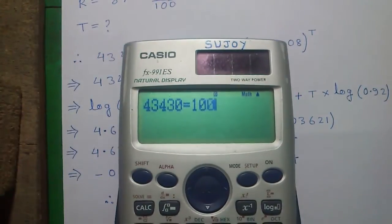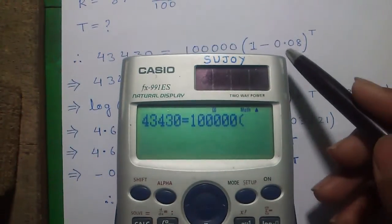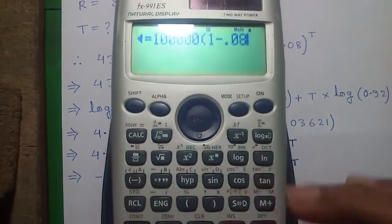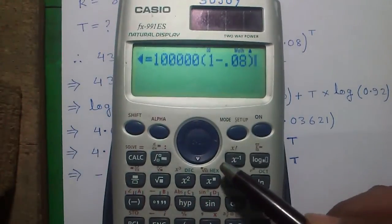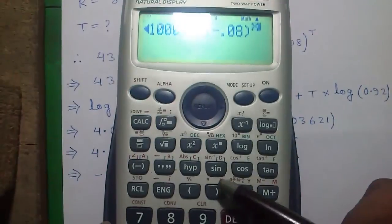1 lakh into 1 minus 0.08, press the right parenthesis. This button for to the power, and press alpha and right parenthesis for X.